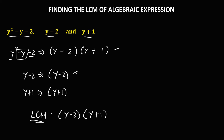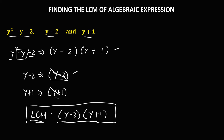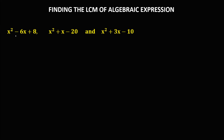For the second expression, since we already have y minus 2, there's no need to add it. For y plus 1, we already have y plus 1, so no need to add. Therefore, this is the LCM of this expression.